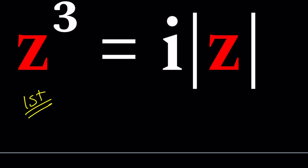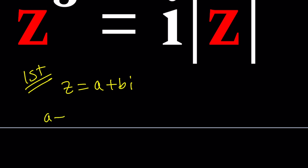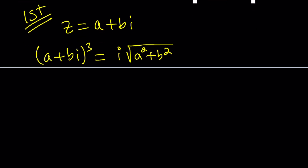For my first method I'm going to set z equal to a plus bi. Then that implies a plus bi to the third equals i times the square root of a squared plus b squared, which is the absolute value.